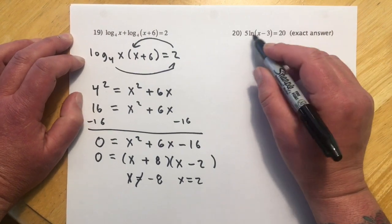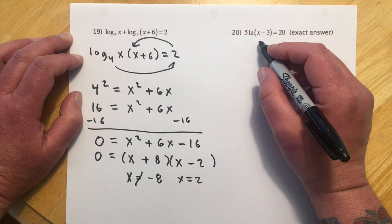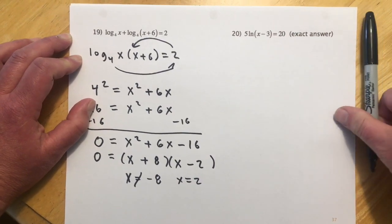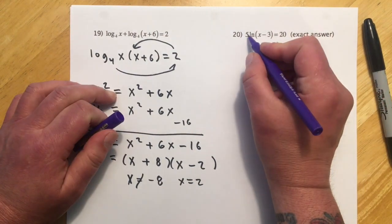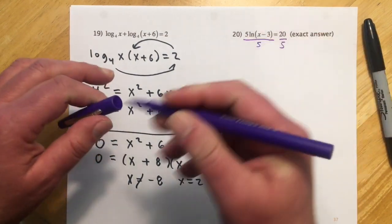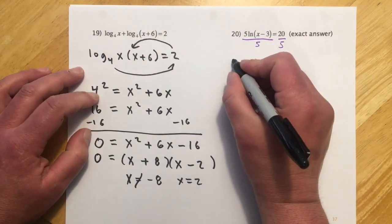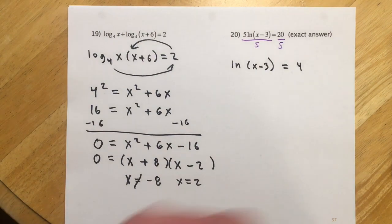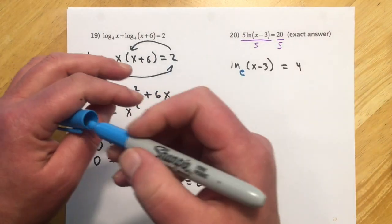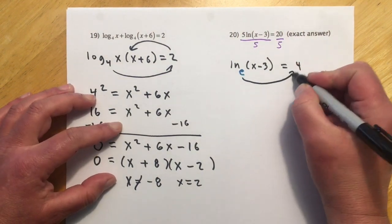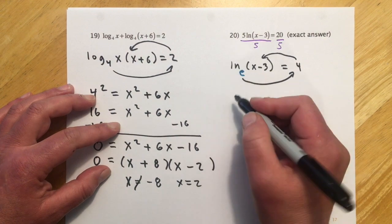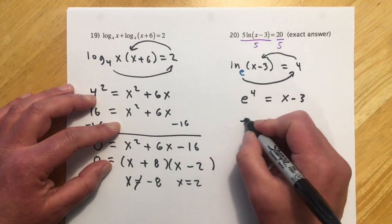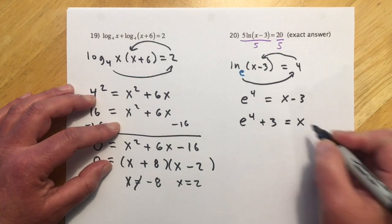Number 20 involves a natural log — it works exactly the same way, but we give an exact answer. I want to isolate the single log, so divide both sides by 5: natural log of (x−3) = 4. Remember, ln means there's an invisible e for the base. So e to the fourth equals the stuff inside: e⁴ = x − 3. Add 3 over: x = e⁴ + 3.